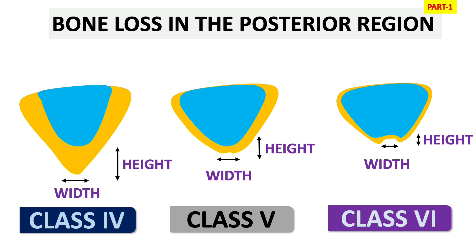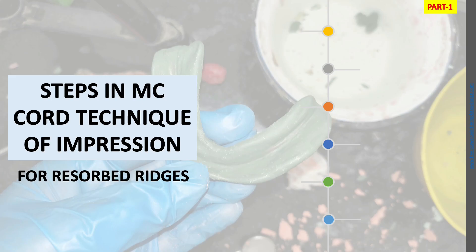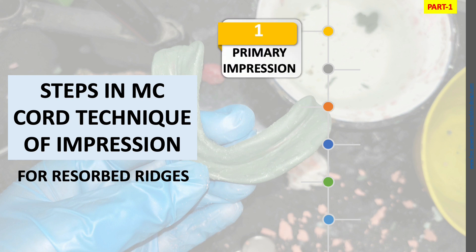In Class 6 there is extensive loss in both width and height, which results in depression in the ridge. In Class 5 and Class 6 ridges it is very difficult to construct a denture using conventional technique. So for Class 5 and Class 6 we are going to use the McCord technique or the all-green technique.